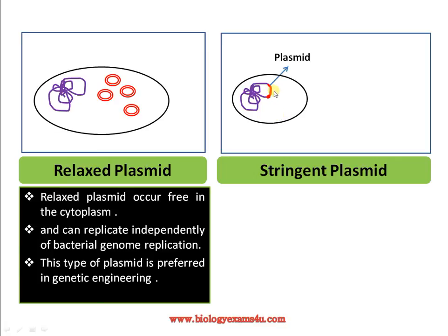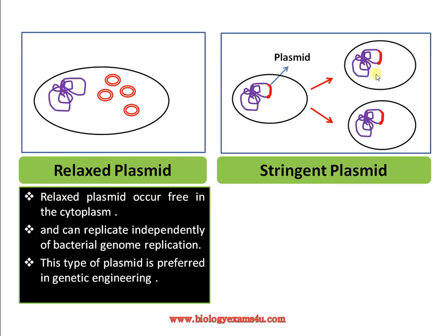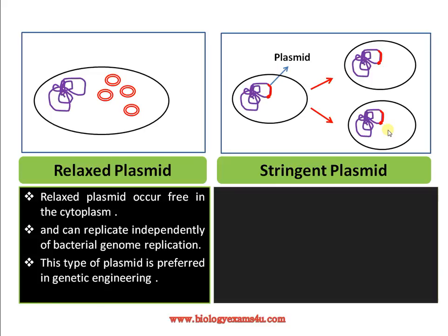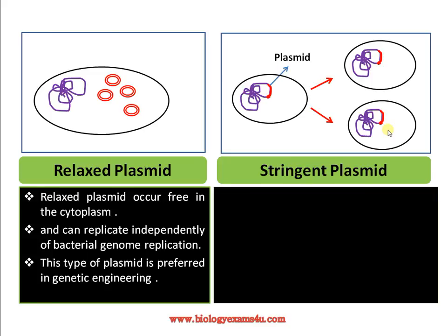In the case of a stringent plasmid, the plasmid is seen attached to the bacterial chromosome. Here the plasmid is not independent; division occurs only upon division of the bacterial genome, so this plasmid will replicate only upon replication of the bacterial genome. This type of plasmid is not preferred in gene cloning.